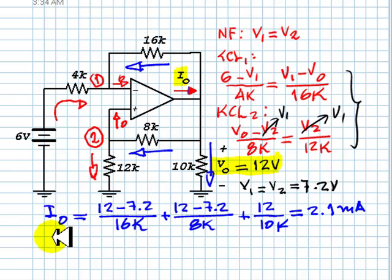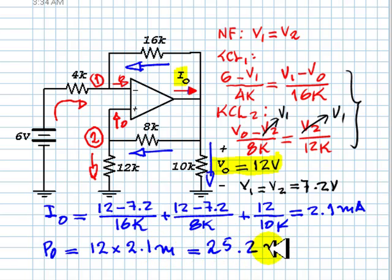What about the output power of the op-amp? Well, the output power is this voltage, V0, 12 volts, times that current, so it's 12 times 2.1 milliamps, 25.2 milliwatts. And that's it.